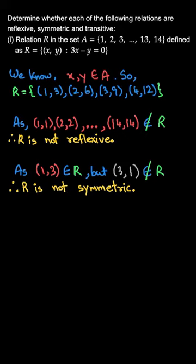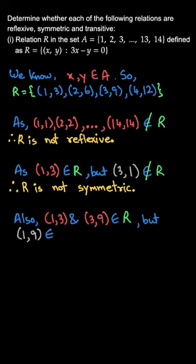And for transitive we'll check, say (1, 3) and (3, 9) belongs to R but (1, 9) is missing. And because of that R is not transitive as well.